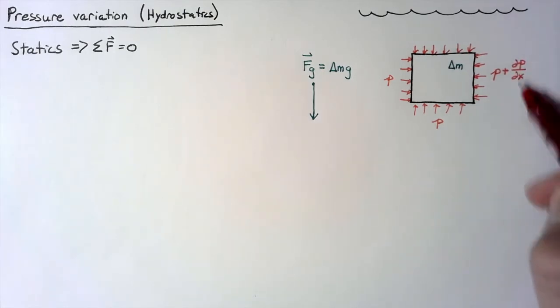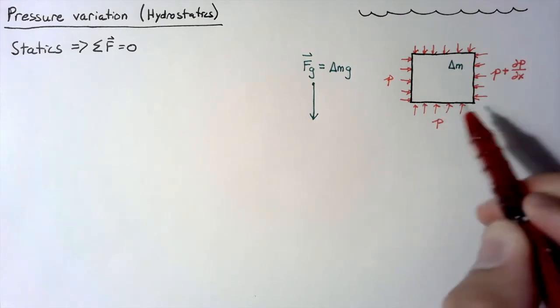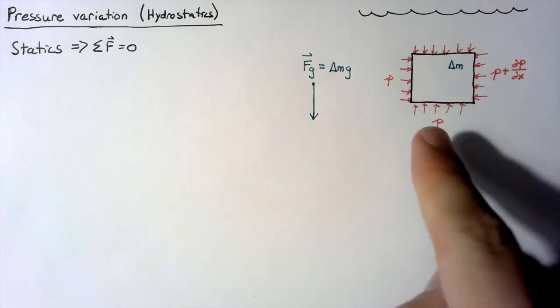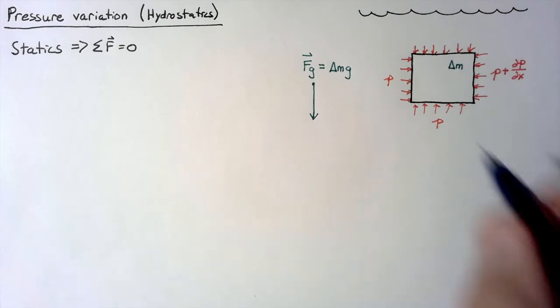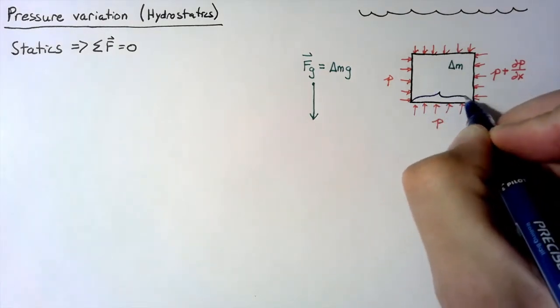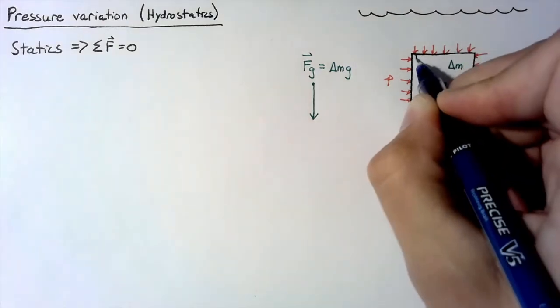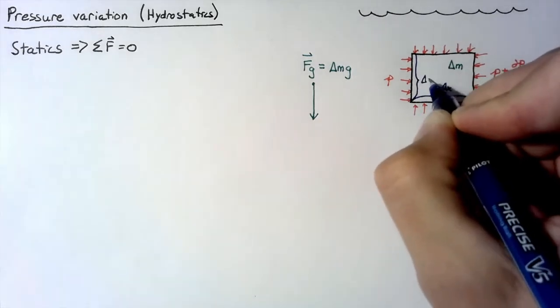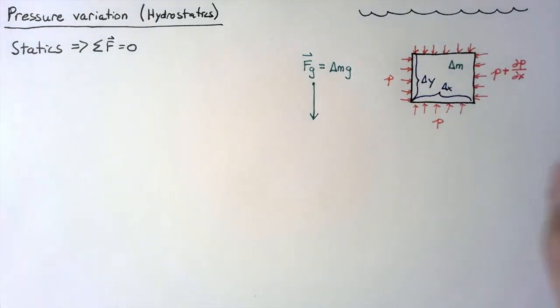And we need to multiply this gradient by some distance, so I'm going to give this distance a name. I'm going to call this distance in the x direction delta x, and in the y direction, this is going to be delta y. So this ends up being dpdx multiplied by delta x.